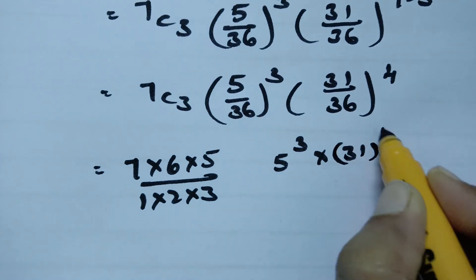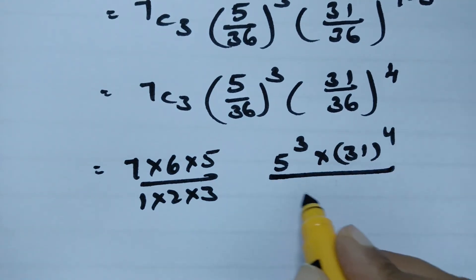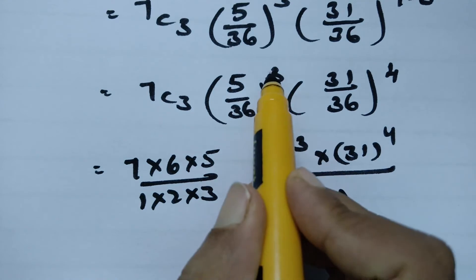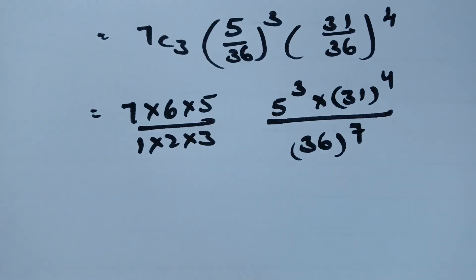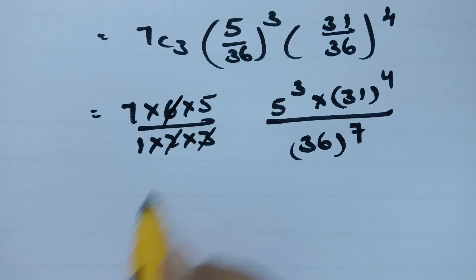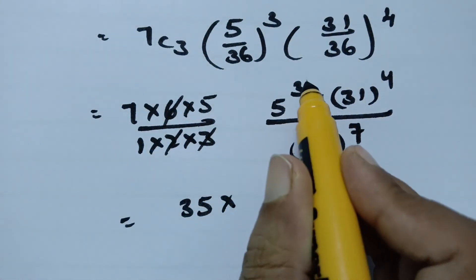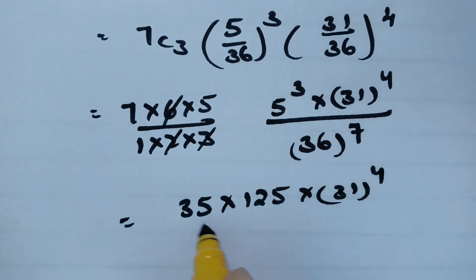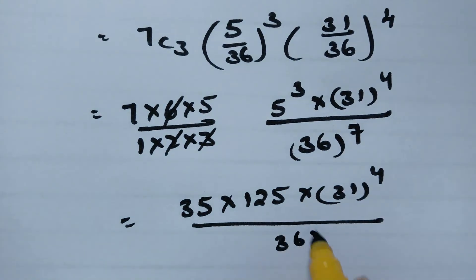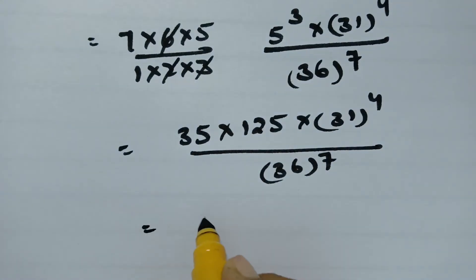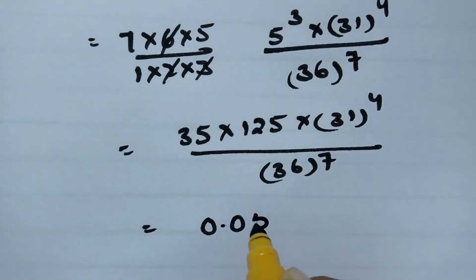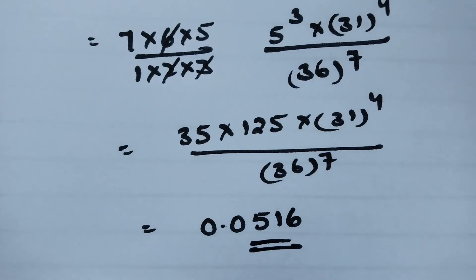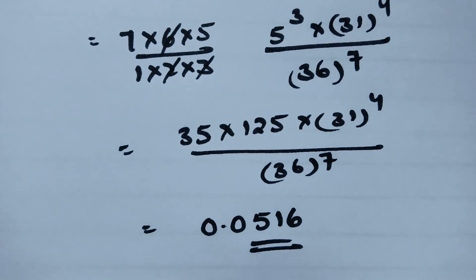So we have 35 × 125 × 31^4 divided by 36^7. Using a calculator, this gives 0.0516. Therefore, the probability of getting a sum of 6 exactly 3 times in 7 throws with a pair of fair dice is 0.0516.